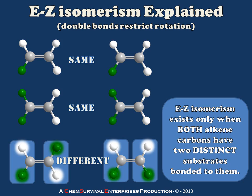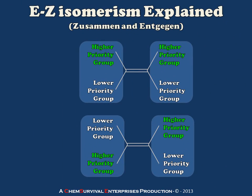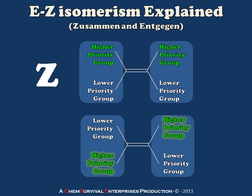Now let's take a look at an example. I'm going to name a couple of alkenes using the E-Z isomerism methodology, but first I'll explain how we go about identifying higher priority and lower priority groups, because that's how we actually arrive at the designation of E or Z. In the case when the higher priority groups are on the same side of the alkene double bond, we call this a Z isomer. In the case where the higher priority groups are on opposite sides, we call this an E isomer. These names come from German words for same and opposite — Z means higher priority on the same side, E means higher priority on opposite sides.